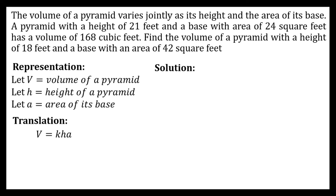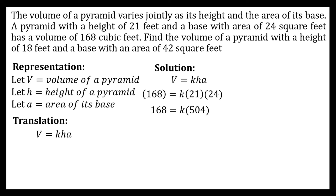For our solution, we must first find the constant of variation using the first set of given values: a pyramid with a height of 21 feet, a base area of 24 square feet, and a volume of 168 cubic feet. Using the same equation and substituting: 168 is equal to the constant of variation times 21 feet times 24 square feet.